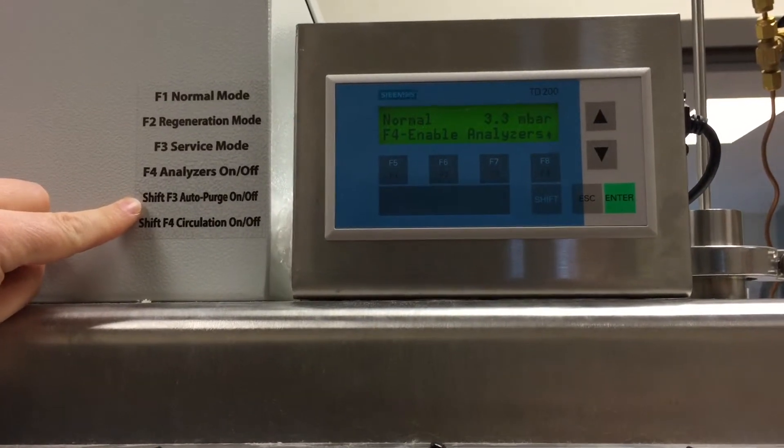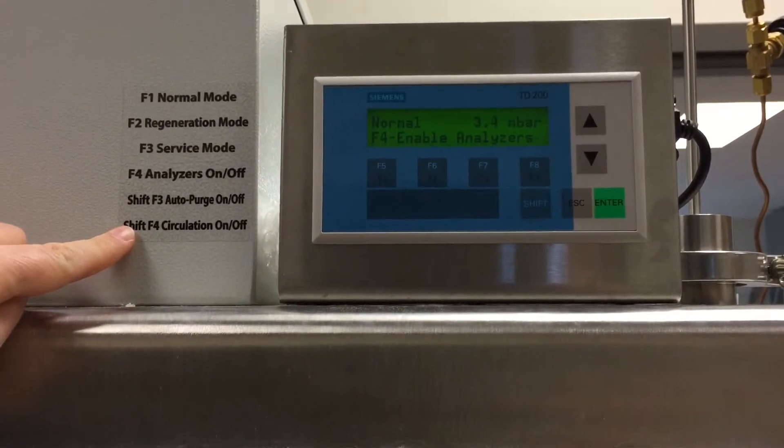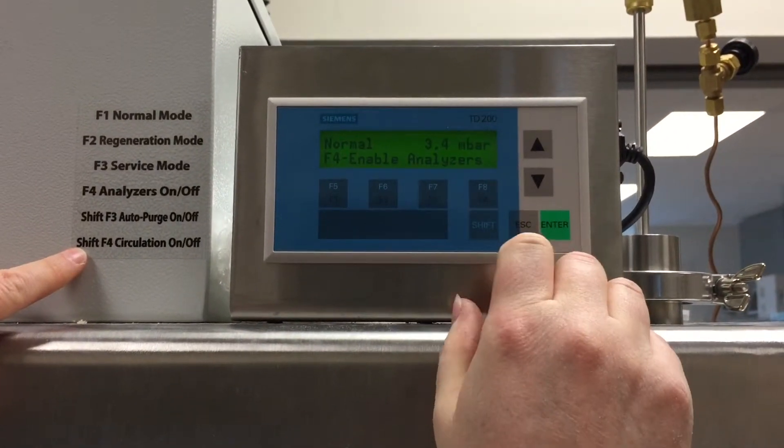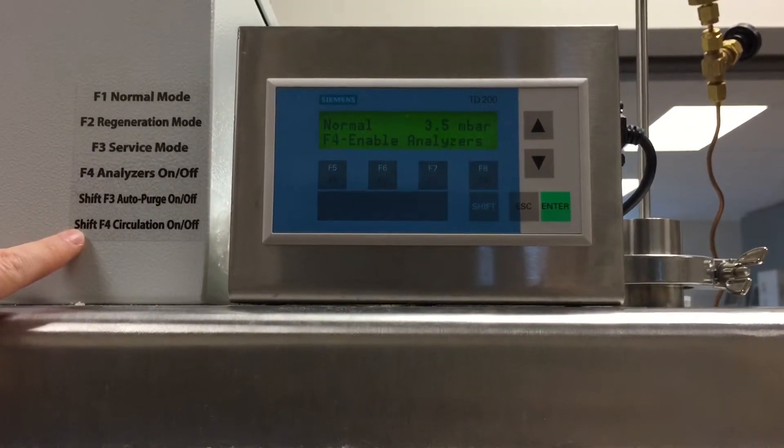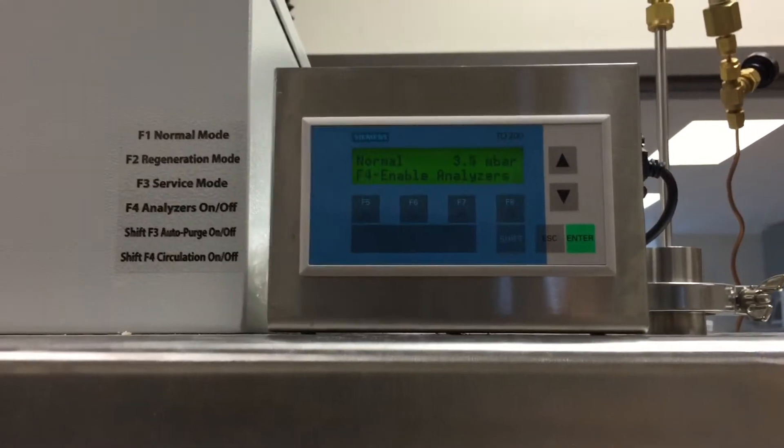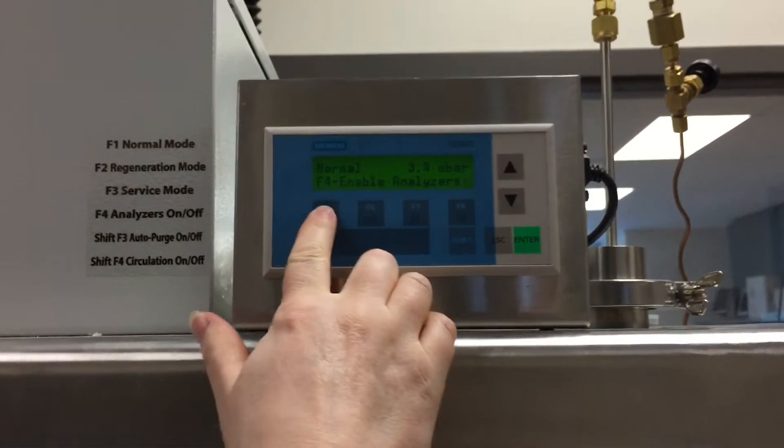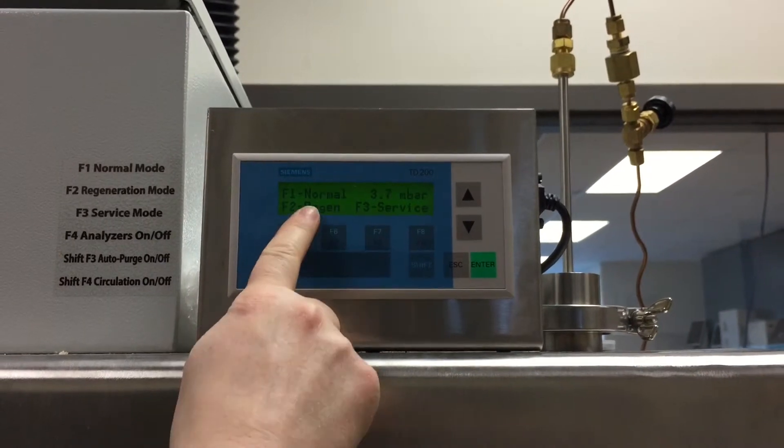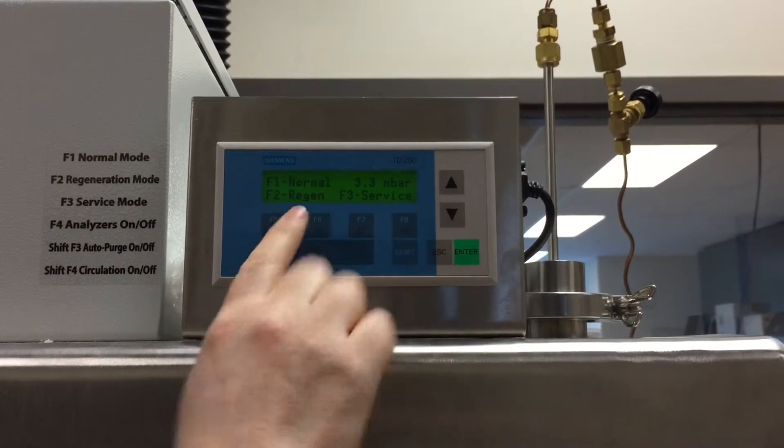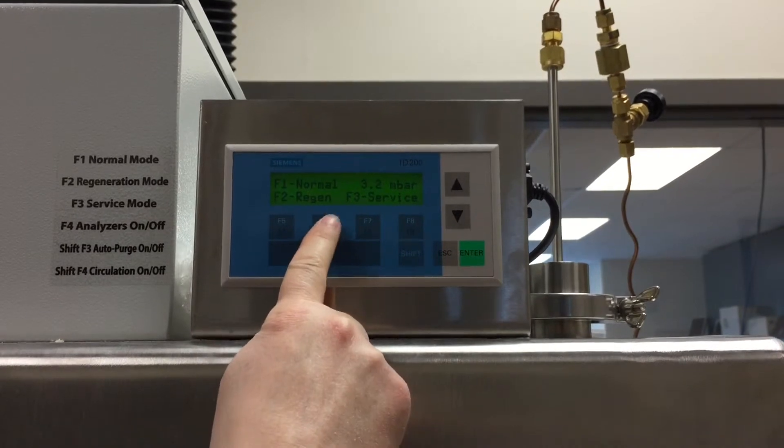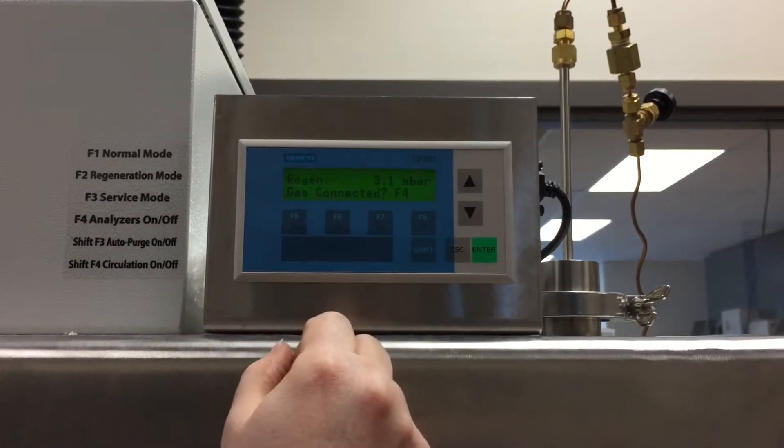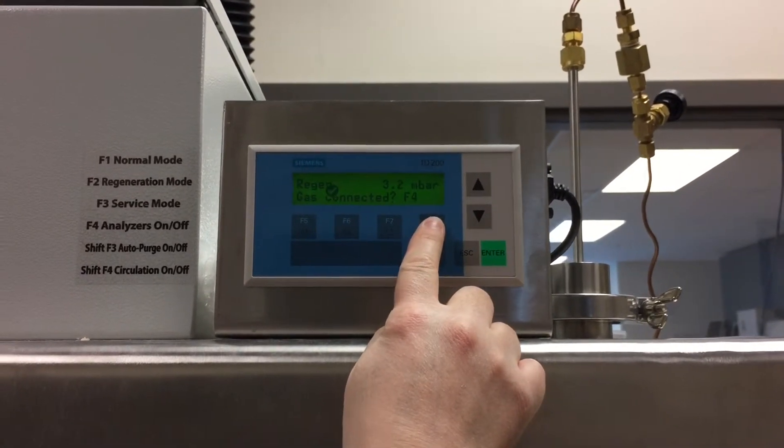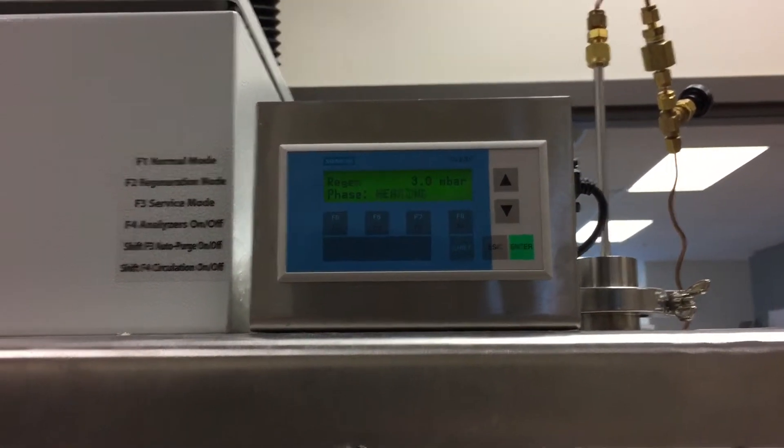The only things that you have to do to start the regeneration is you have to turn off the circulation. So you just hit shift F4 and you can hear that noise of the circulation turning off. All right, next we go to hit F1 and go to the regeneration screen and it says F2 for regen. Just hit F2. It asks if the gases are connected and they are. So now we hit F4. And that's all that you have to do.